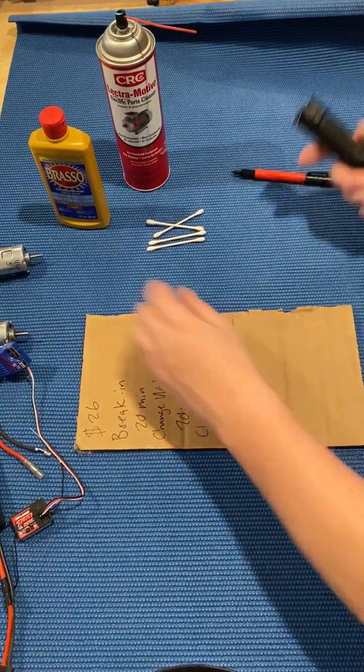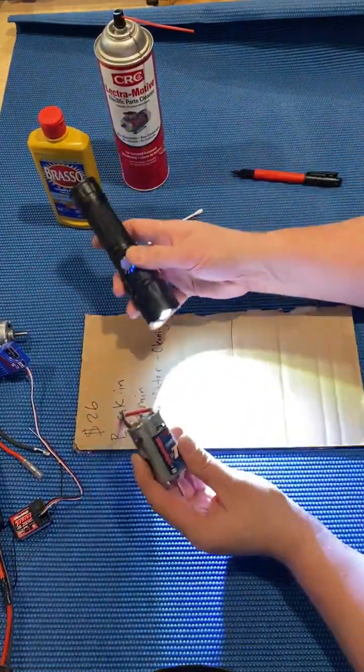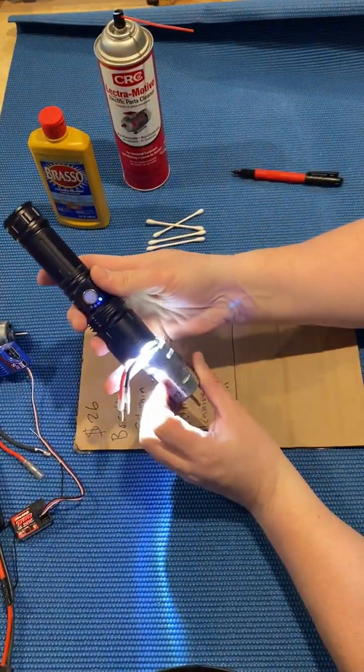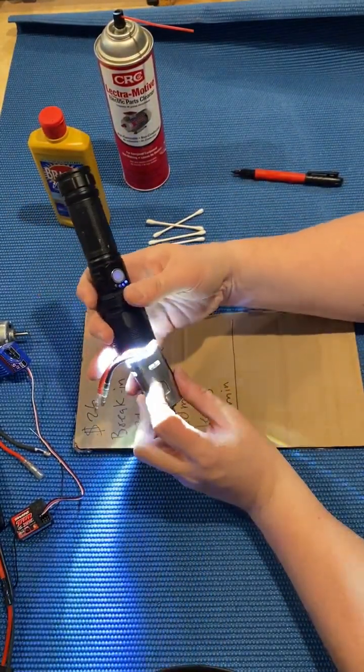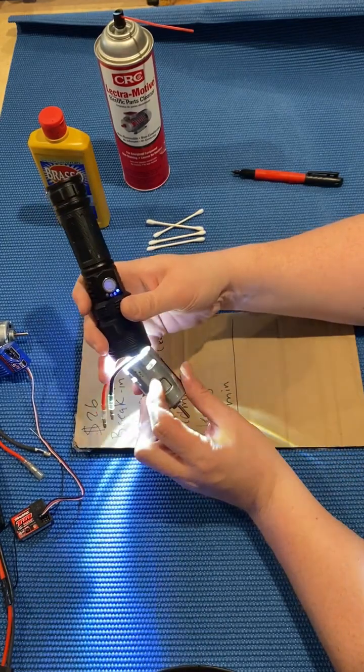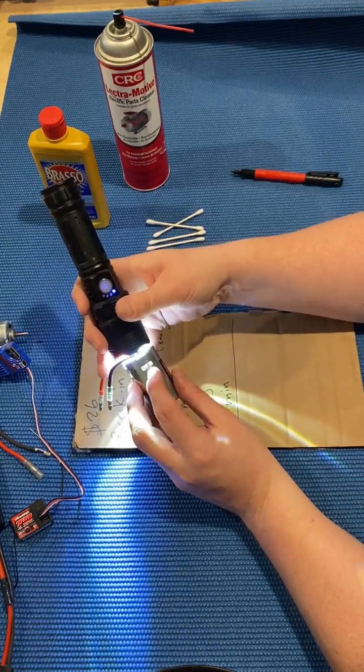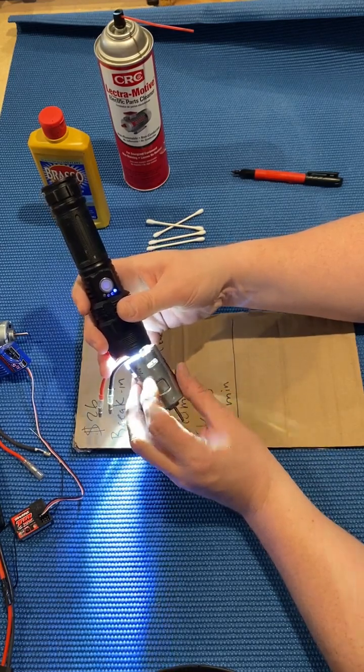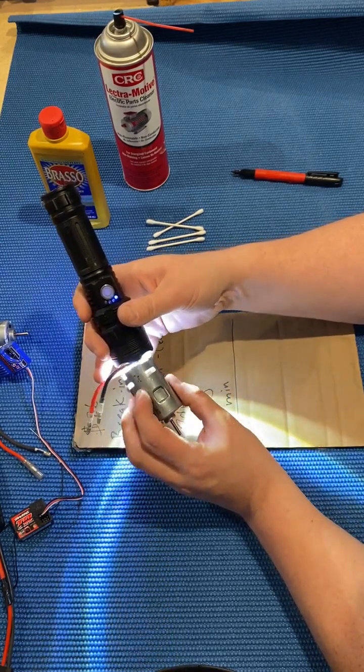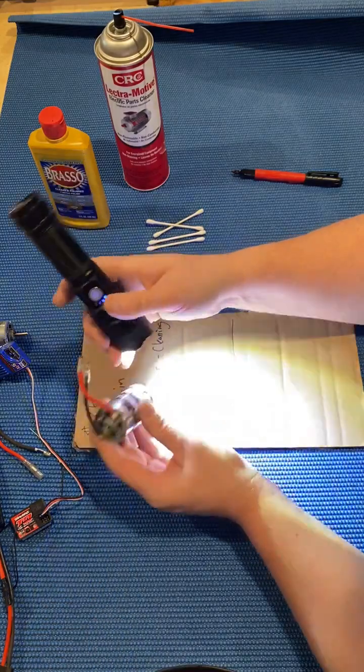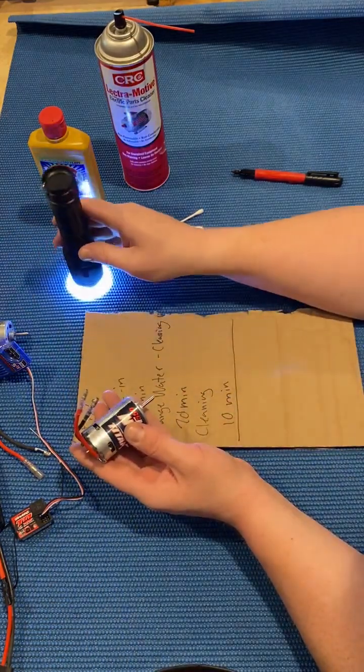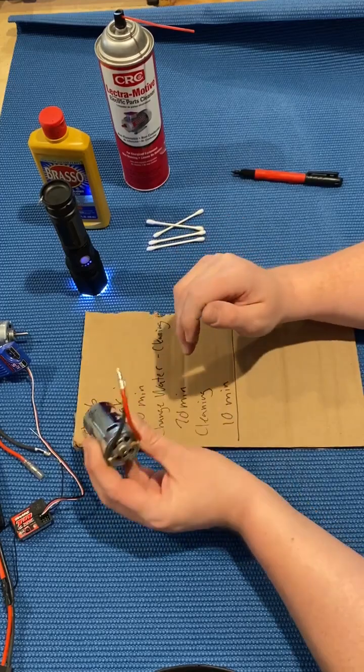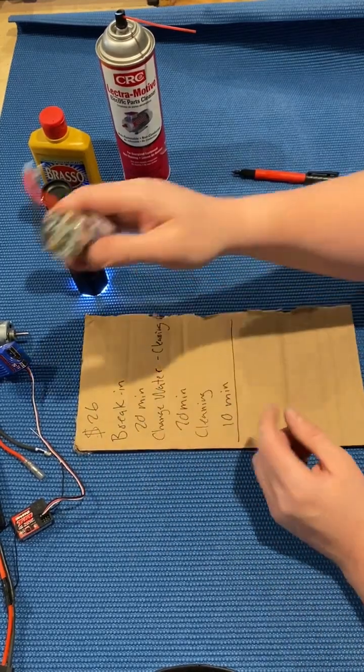After you get through this break-in period, what you want to do is you want to take a flashlight. You want to stick the flashlight on the end bell and peer through the side. What you should see, and this can be difficult on camera, so I'm just going to describe it. What you should see is a perfectly clean copper commutator. It shouldn't have any black on it. It shouldn't have any rough edges. And at that point, I consider that motor race ready, air it out, clean it out, oil, put it in your car. You're ready for race day.